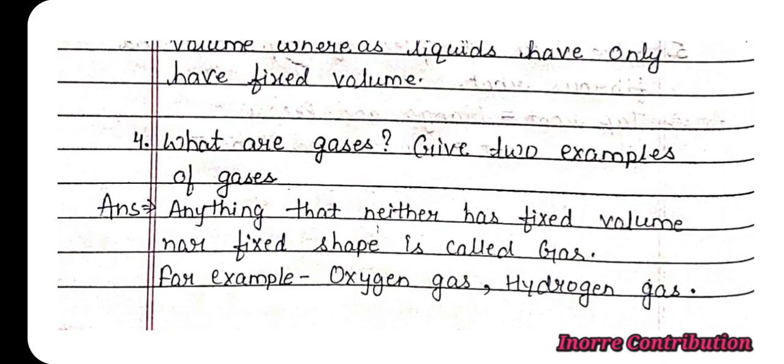Question number four, what are gases? Give two examples of gases. Answer, anything that neither has fixed volume nor fixed shape is called gas. For example, oxygen gas and hydrogen gas.